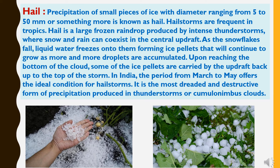Precipitation of small pieces of ice with diameter ranging from 5 to 50 mm or sometimes more is known as hail. Hailstorms are frequent in the tropics. Hail is a large frozen raindrop produced by intense thunderstorms where snow and rain can coexist in the central updraft. As the snowflakes fall, liquid water freezes onto them, forming ice pellets that continue to grow as more and more droplets are accumulated.